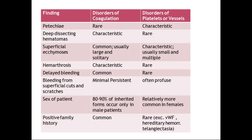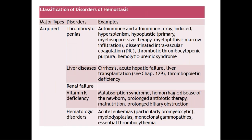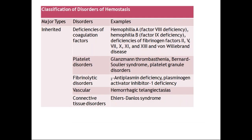Inherited causes follow the same sequence: first, vascular abnormalities like hereditary hemorrhagic telangiectasia; then platelet disorders — Glanzmann's thrombasthenia, Bernard-Soulier syndrome, or platelet granule disorders — where the problem is qualitative (platelet adhesion and aggregation defects) rather than quantitative thrombocytopenia. Next, coagulation abnormalities: hemophilia A, hemophilia B, or other individual clotting factor deficiencies. Finally, connective tissue disorders like Ehlers-Danlos syndrome. These are the major inherited types.